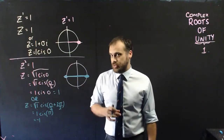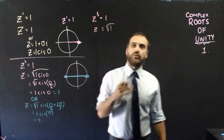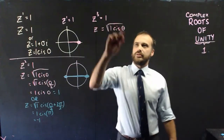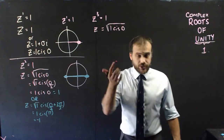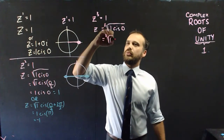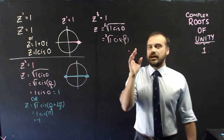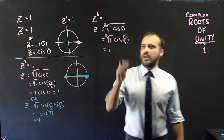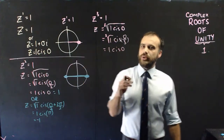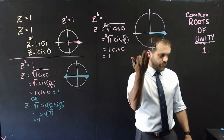z³ = 1 is where it gets interesting. So z is equal to the cube root of 1. Let's treat it as a complex number — 1 cis 0. We can use De Moivre's theorem here as well. So cube root of 1 cis(0/3). The cube root of 1 is 1, and cis(0/3) is cis 0. And we should know that 1 cis 0 is just the number 1. On an Argand diagram, we have that.